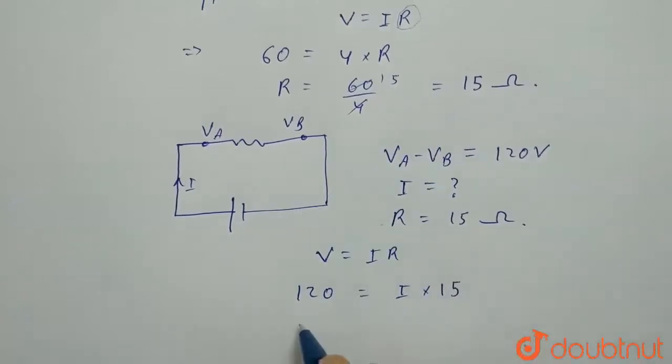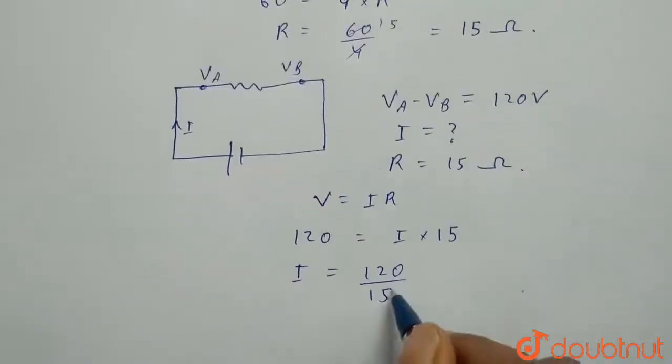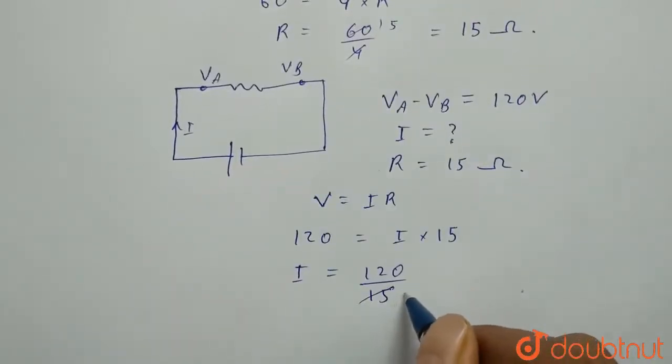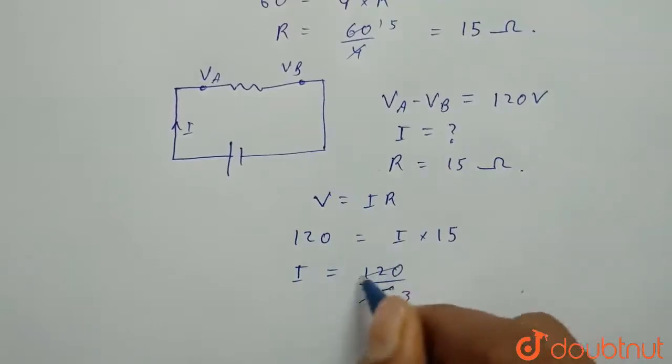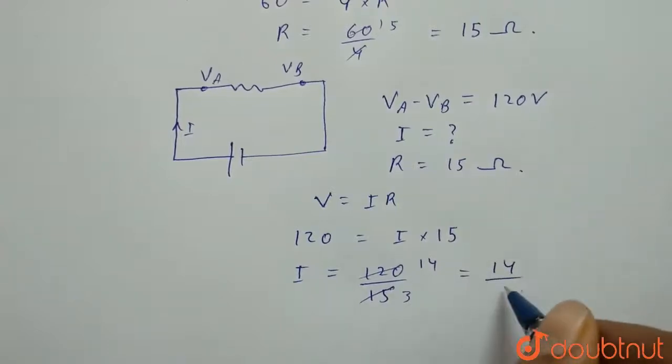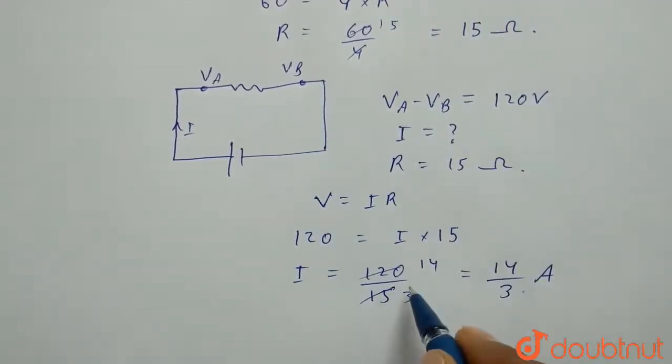So from here we will get I equals 120 by 15. So I will divide it by 5, 3 times and 1 times and 24.